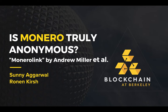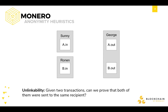There are two main features that Monero presents as core features. One of them is unlinkability, which essentially discusses whether, if we have two transactions, we can trace and prove they were sent to the same person. So if Sunny and Ronan are both sending transactions, can we prove that George received both of them?